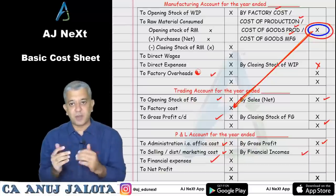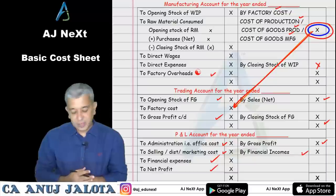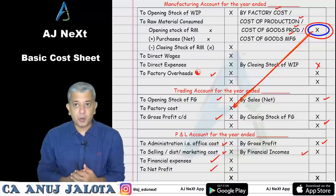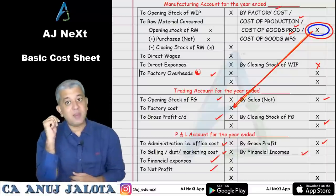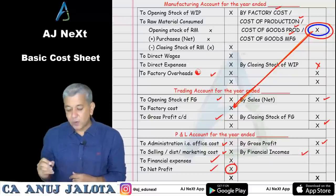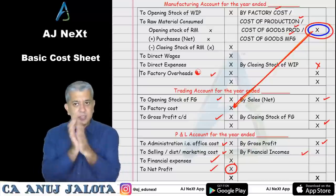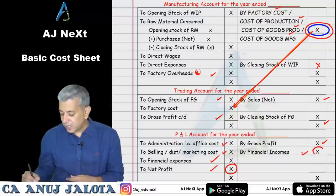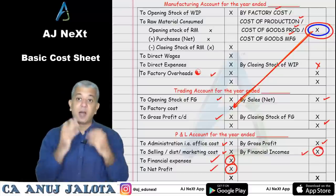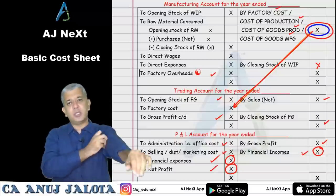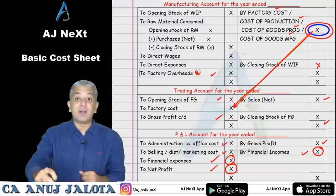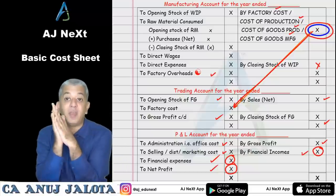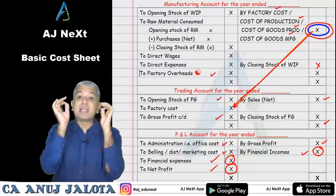Financial incomes and financial expenses are two items that do not appear in cost accounts but do appear in financial accounts. These give you net profit. Now, will the profit in cost accounts and financial accounts ever match? The answer is no. One small reason is that financial incomes and expenses are not in costing — but there are other reasons too, which will become clear as we derive conclusions.